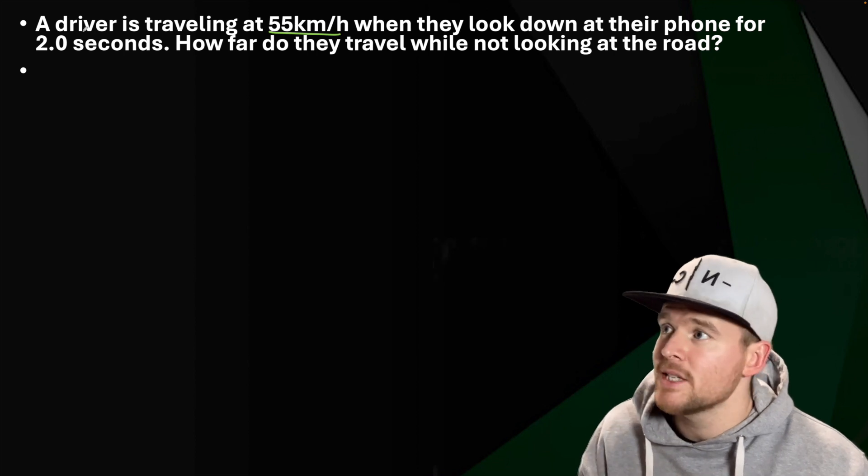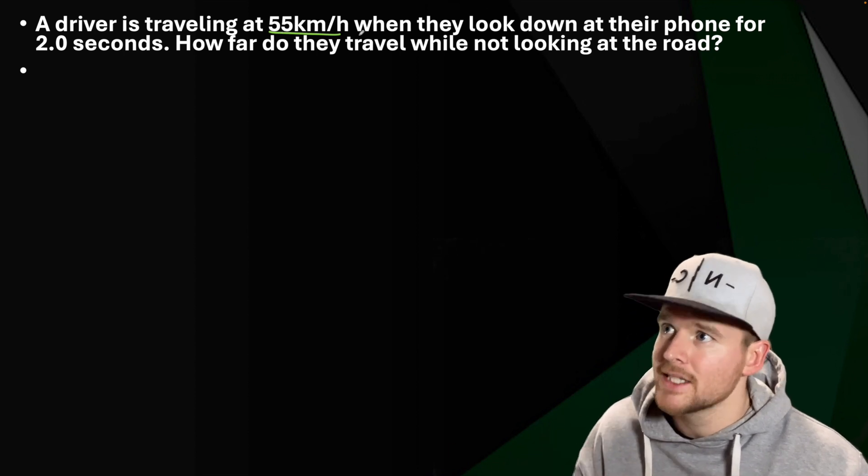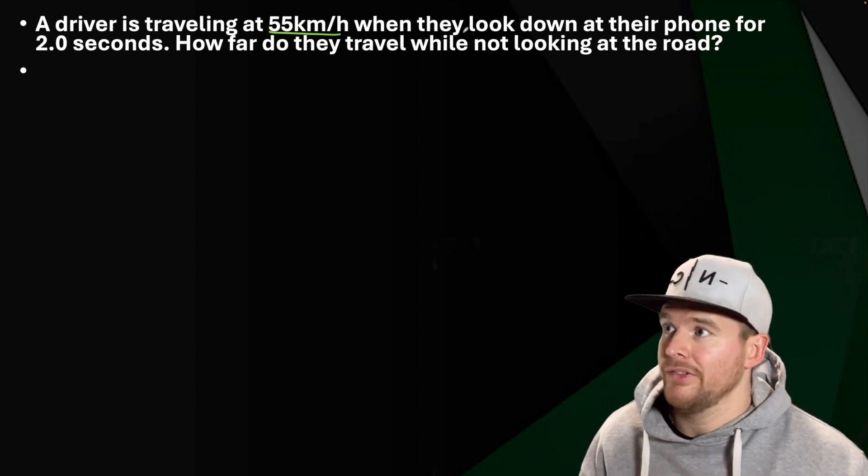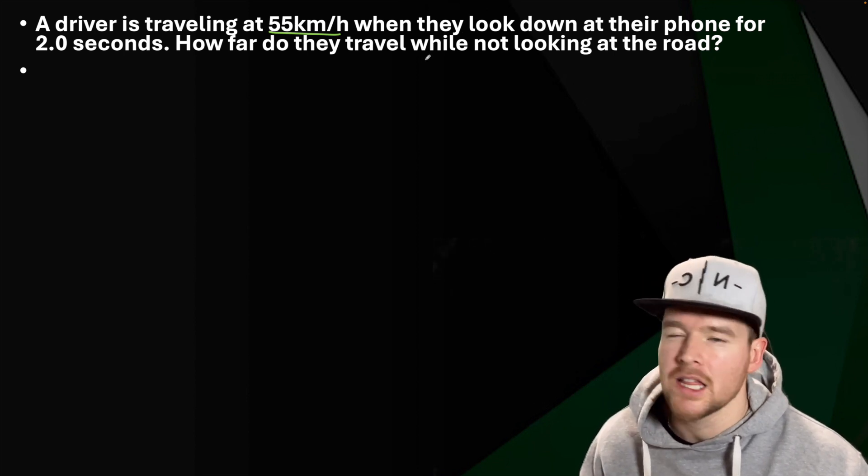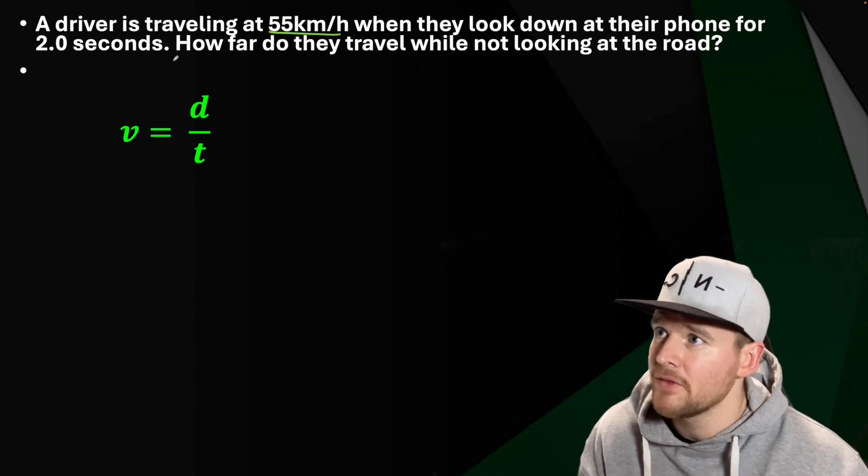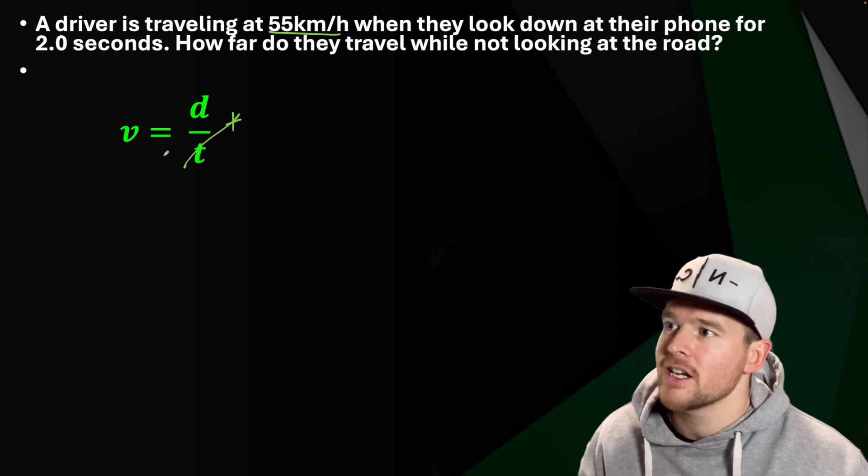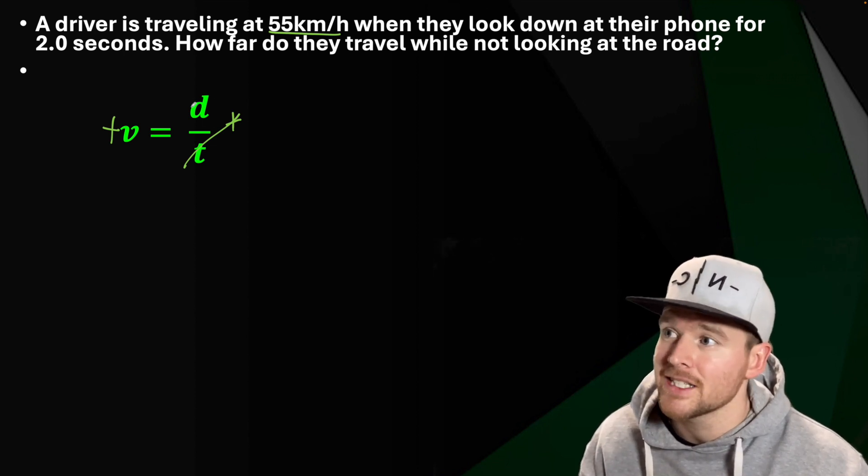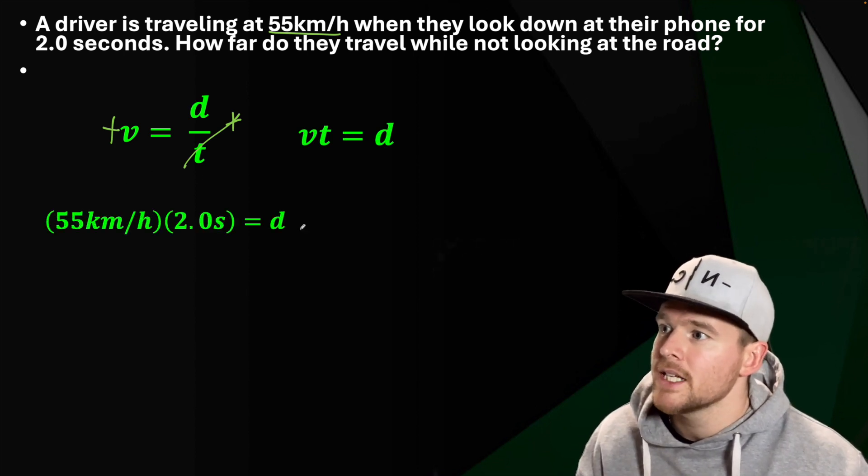Here's the last scenario, solving for displacement. A driver is traveling at 55 kilometers per hour. If that is a constant velocity, we can use our equation v is equal to d over t. They look down at their phone for two seconds. How far do they travel while not looking at the road? So if this is staying at 55 kilometers per hour, v is equal to d over t, we're trying to solve for d. So times by t, and we have time multiplied by velocity gives us our displacement.